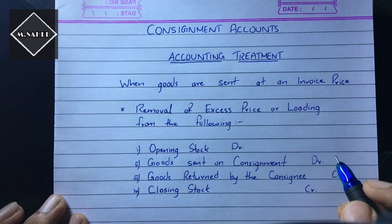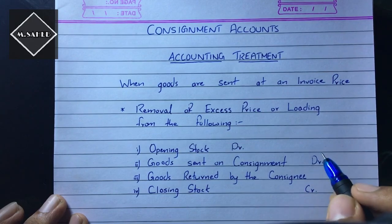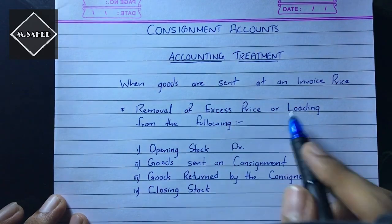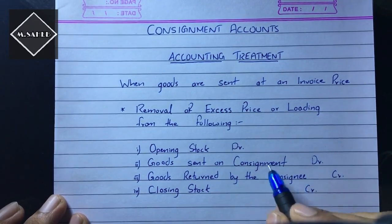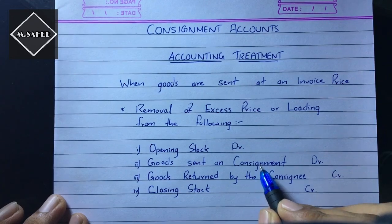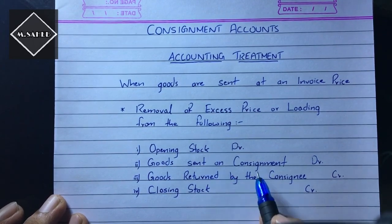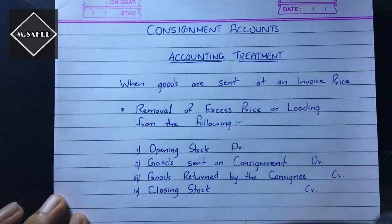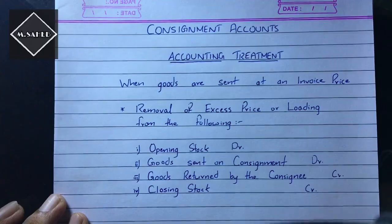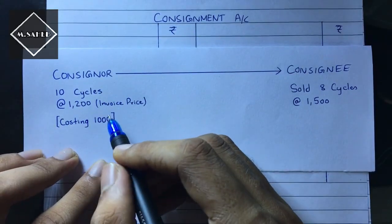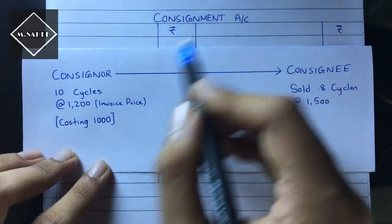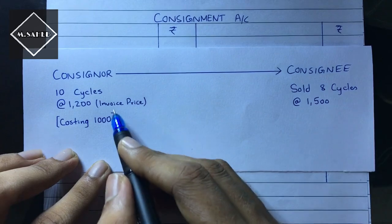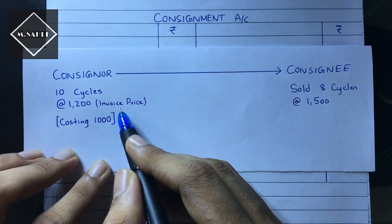Now let us understand this treatment with the help of a small example — how to remove the loading from the following items. I will focus only on two items: goods sent on consignment and closing stock. The opening stock and goods returned we will do in later problems. Let us solve this example and understand how to prepare the consignment account when the consignor sends goods to the consignee at the invoice price.